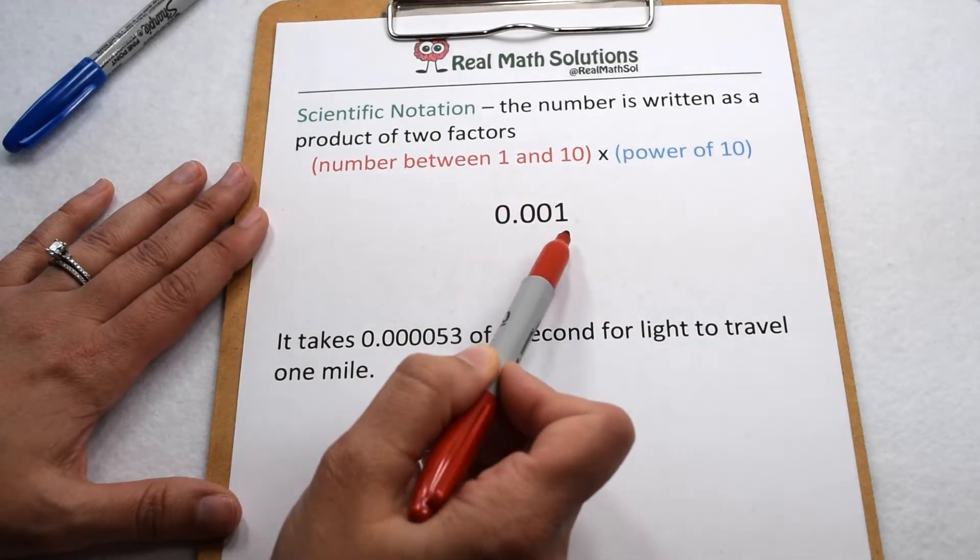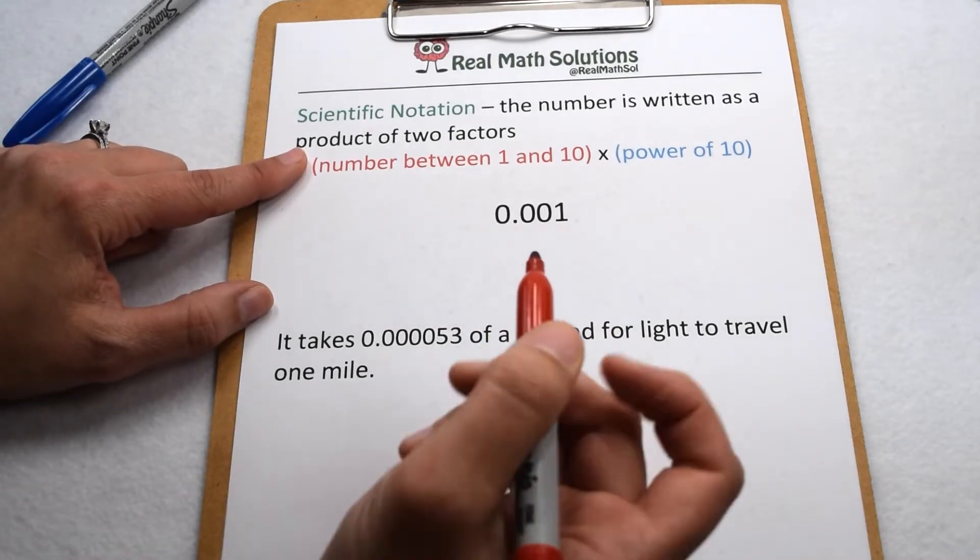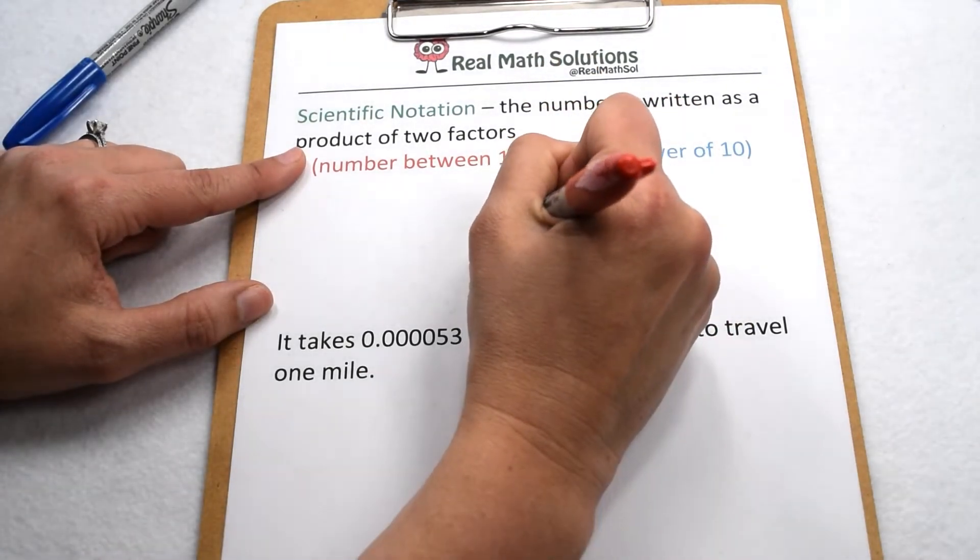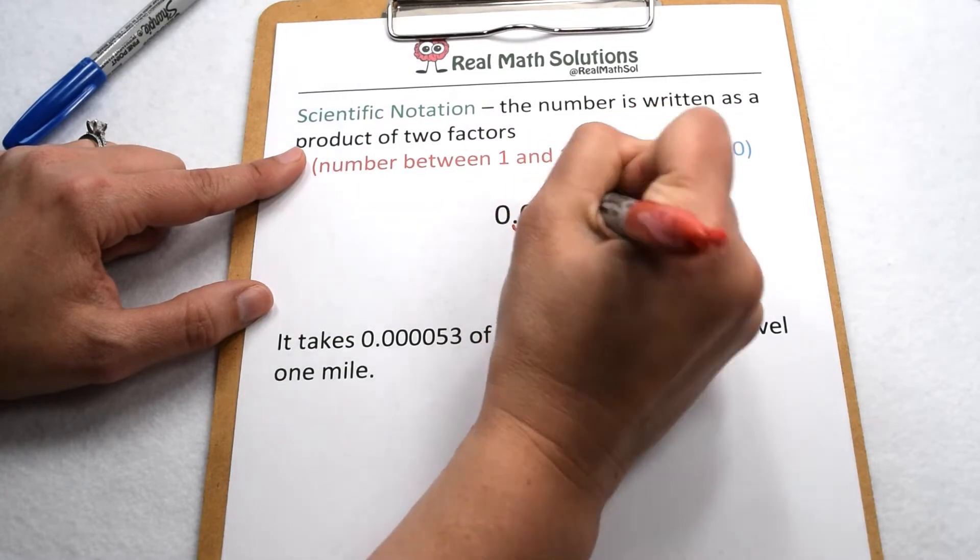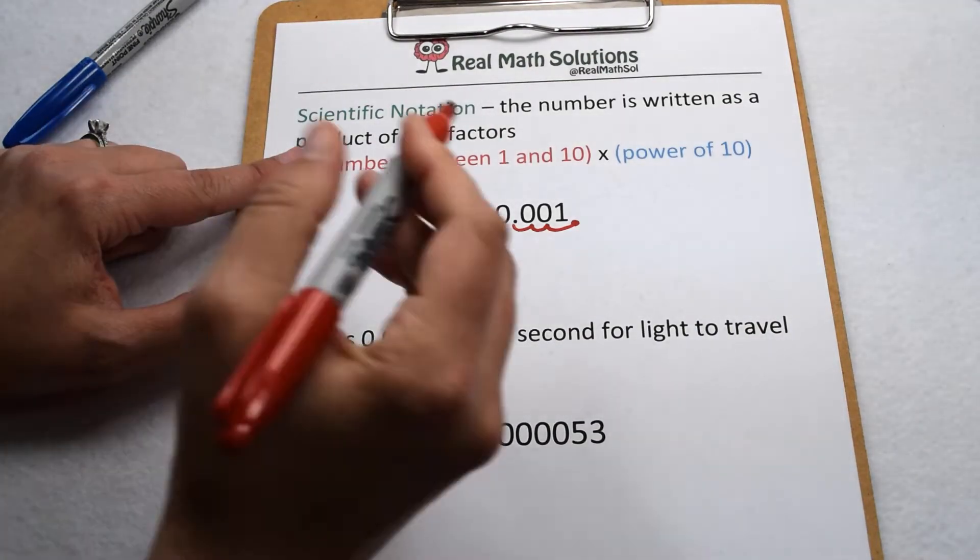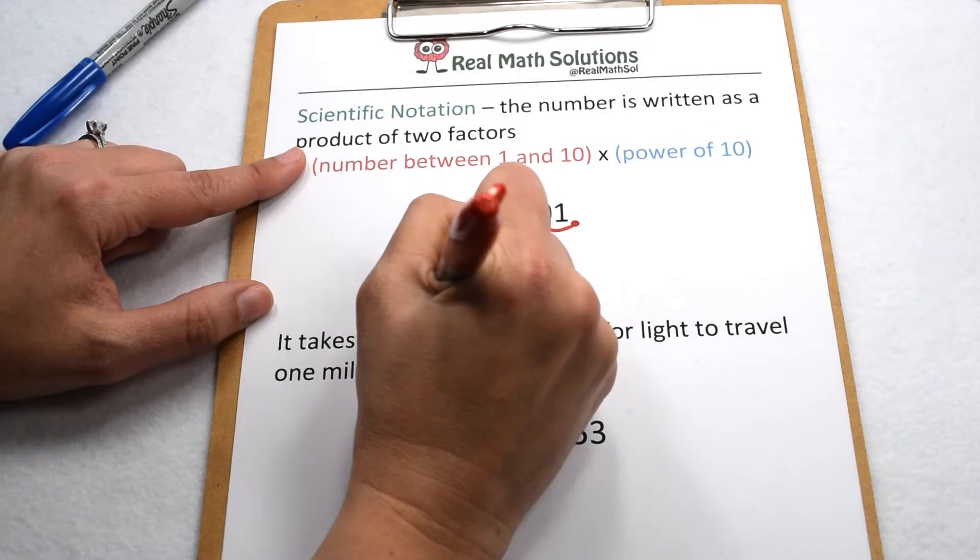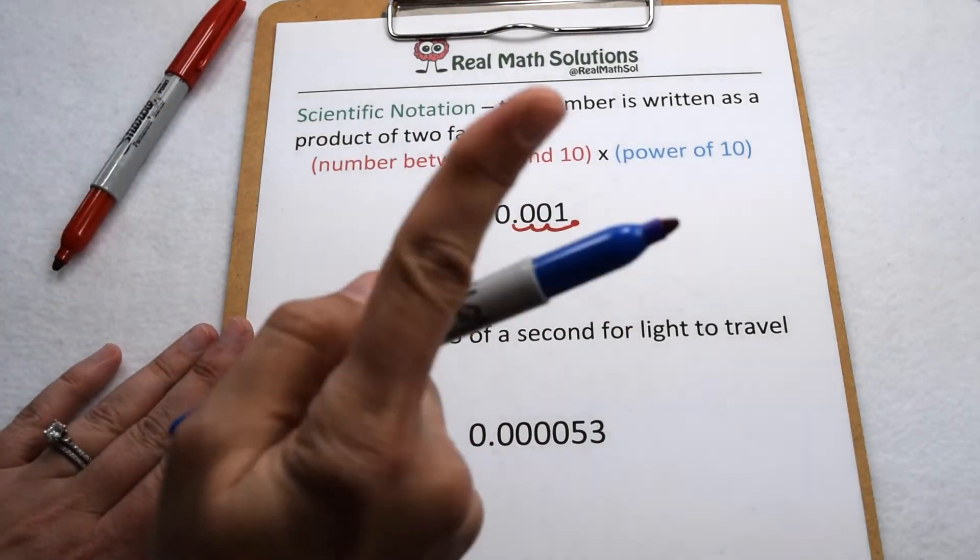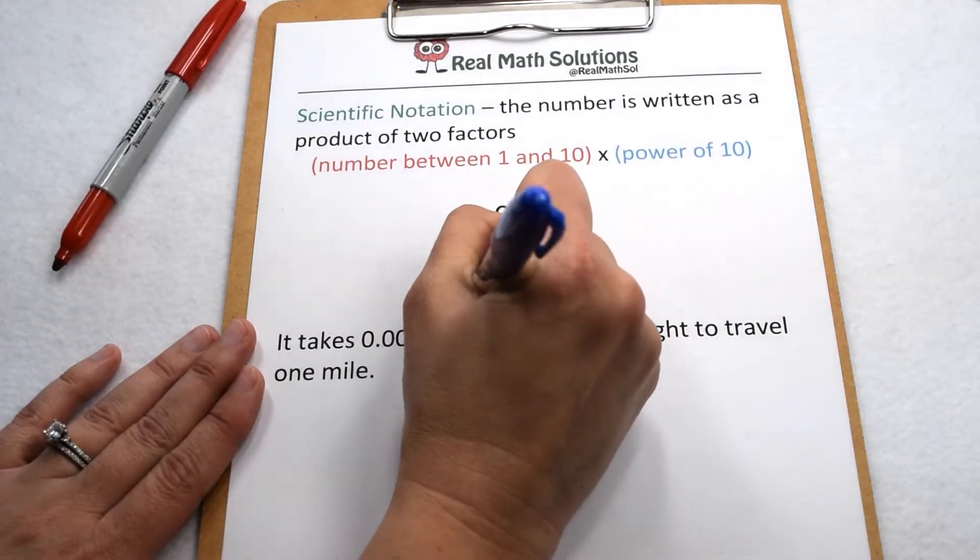Let's start with the number 0.001 and see if we can write it in scientific notation. The first thing we need to do is move our decimal so that we have a number between 1 and 10, and when we do that we move it three places to the right and that brings us to 1. So our factor between 1 and 10 is simply 1 and then we're going to multiply that by a power of 10.